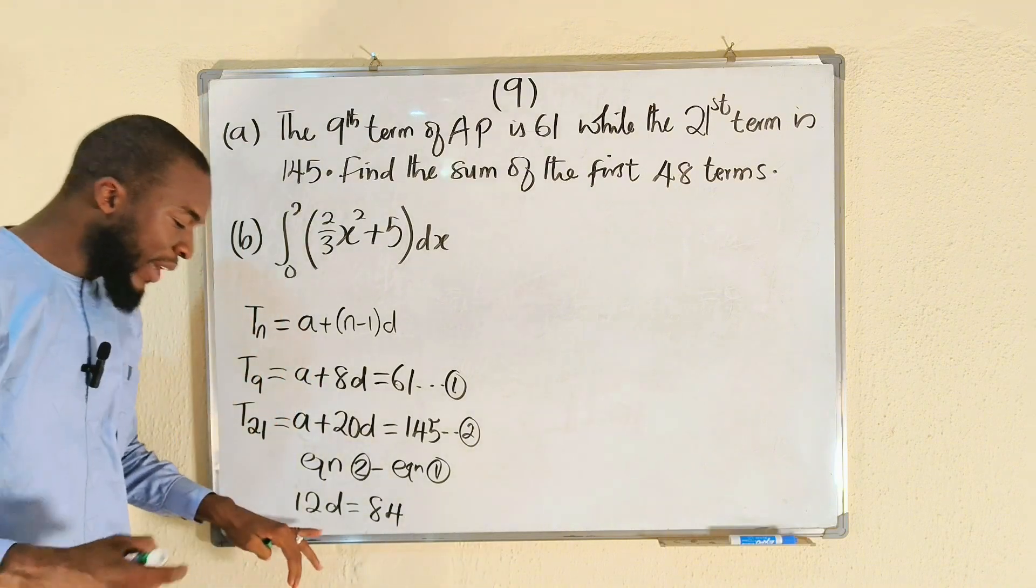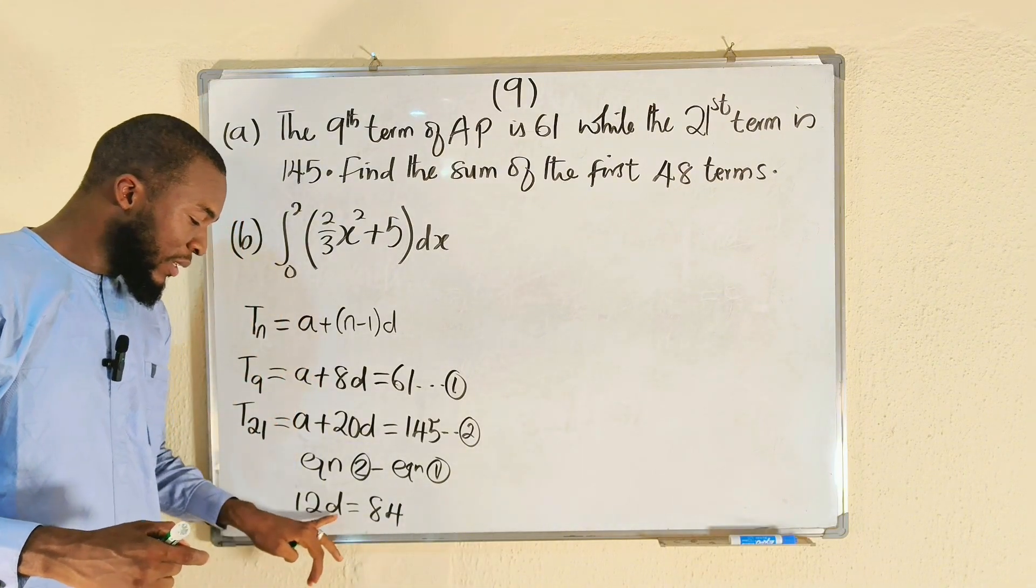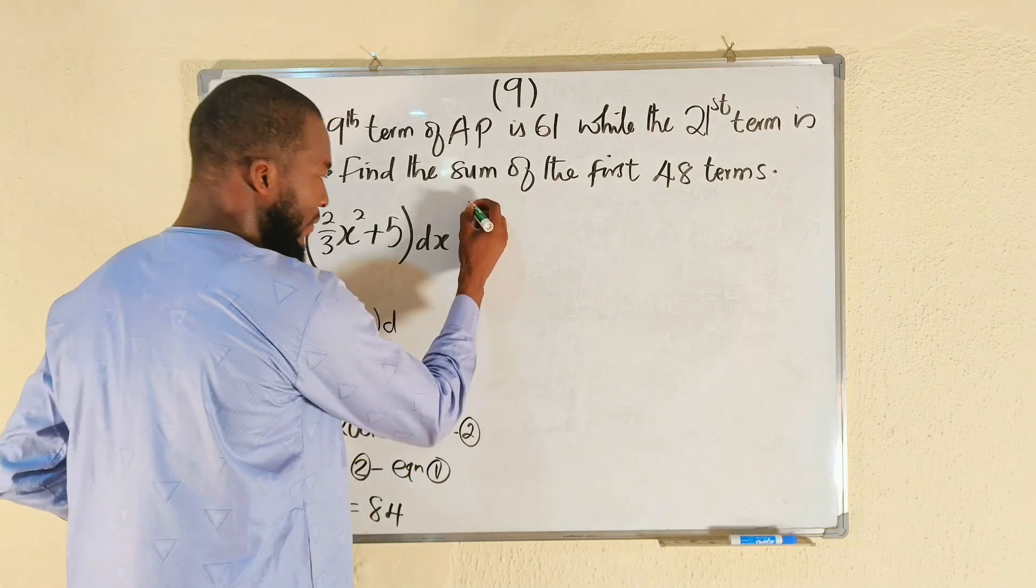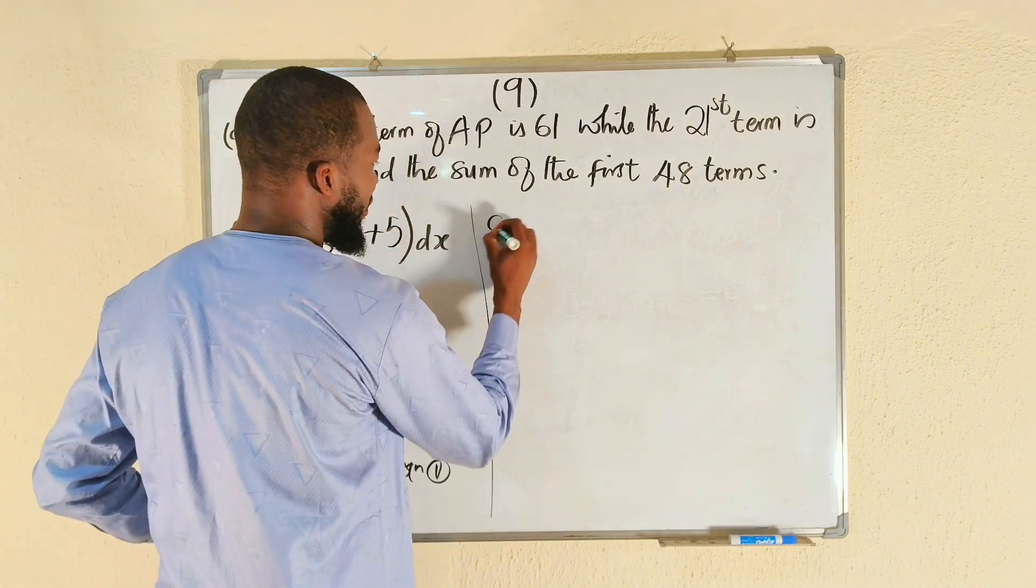If you divide both sides by 12, d will be equal to 7. So we have that d is equal to 7.